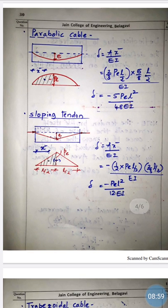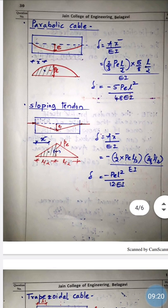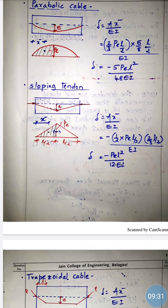For a sloping tendon, the bending moment diagram is triangular. Using δ = AX̄ / EI: the area of the triangular half-BMD = (1/2) × Pe × (L/2). The centroid distance from the base (support end) = (2/3) × (L/2). After calculation: δ = −PeL² / 12EI. The negative sign again indicates upward deflection.